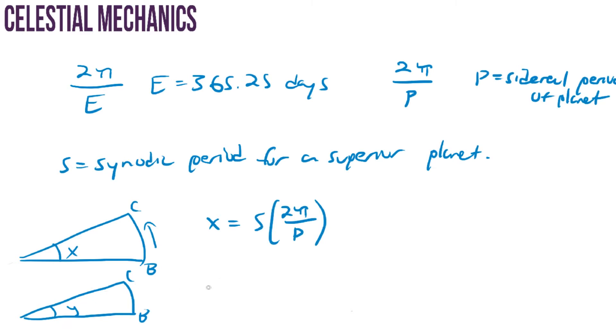For the Earth to travel this same angle, it's not going to have to travel as far. So that we can say then that Y is equal to S minus E times two pi over E.